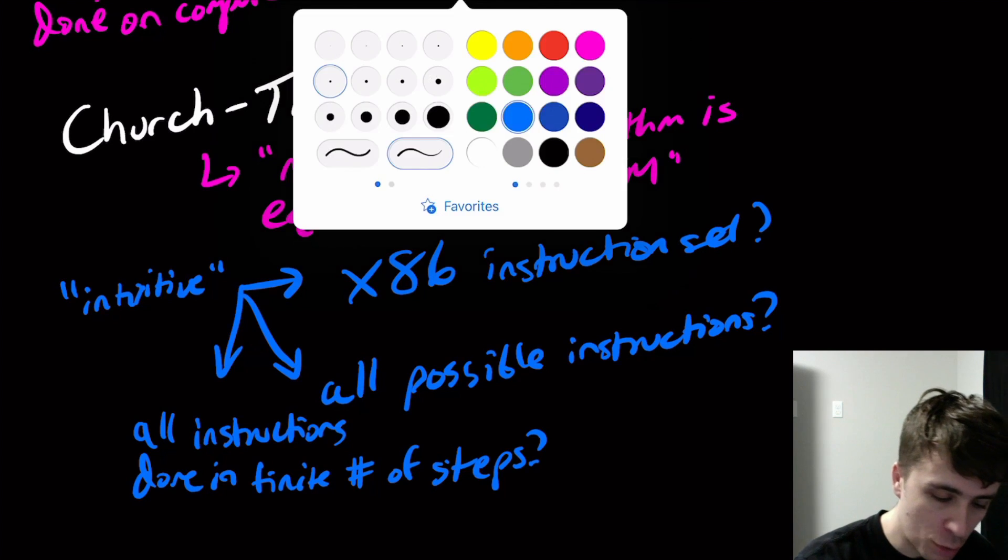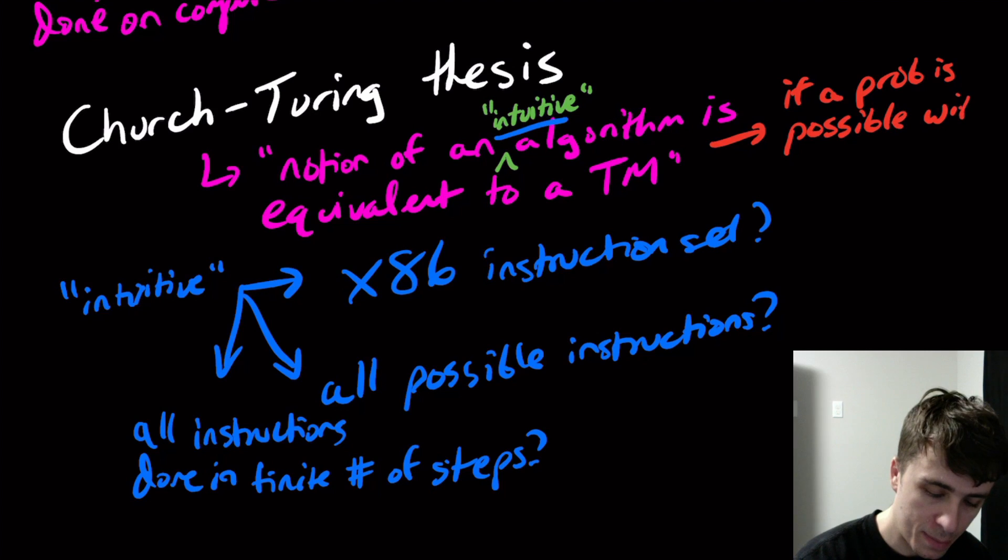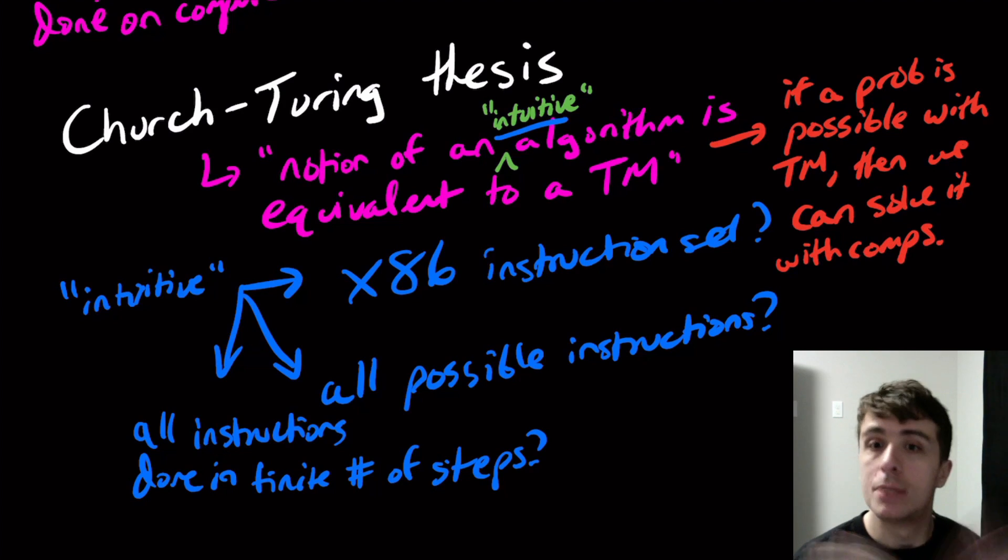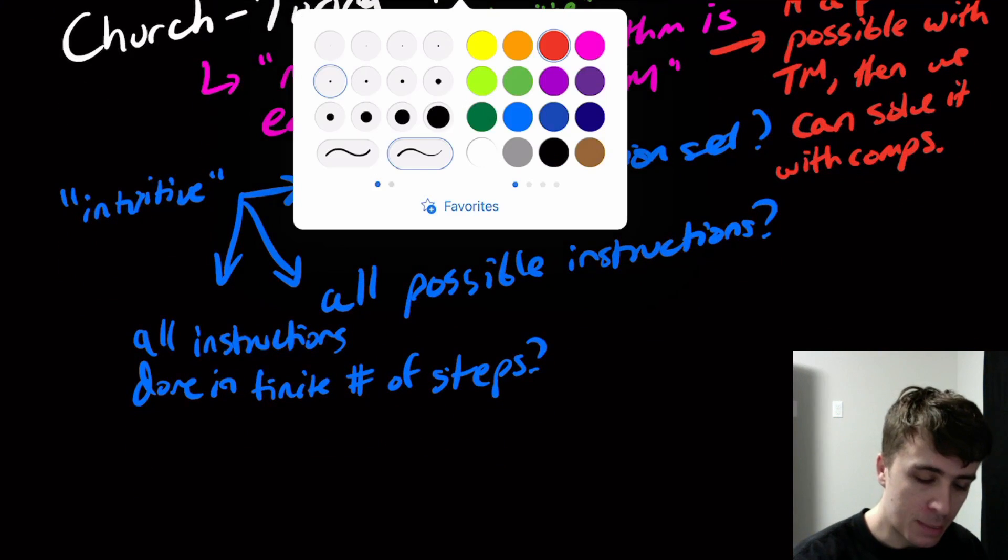So the logical consequence of this, because it's true, is if a problem is possible with a Turing machine, then we can solve it with computers. Right? Because they're equivalent. If I can do it with a Turing machine, then I can do a conversion and make an algorithm that I can run on an actual computer.